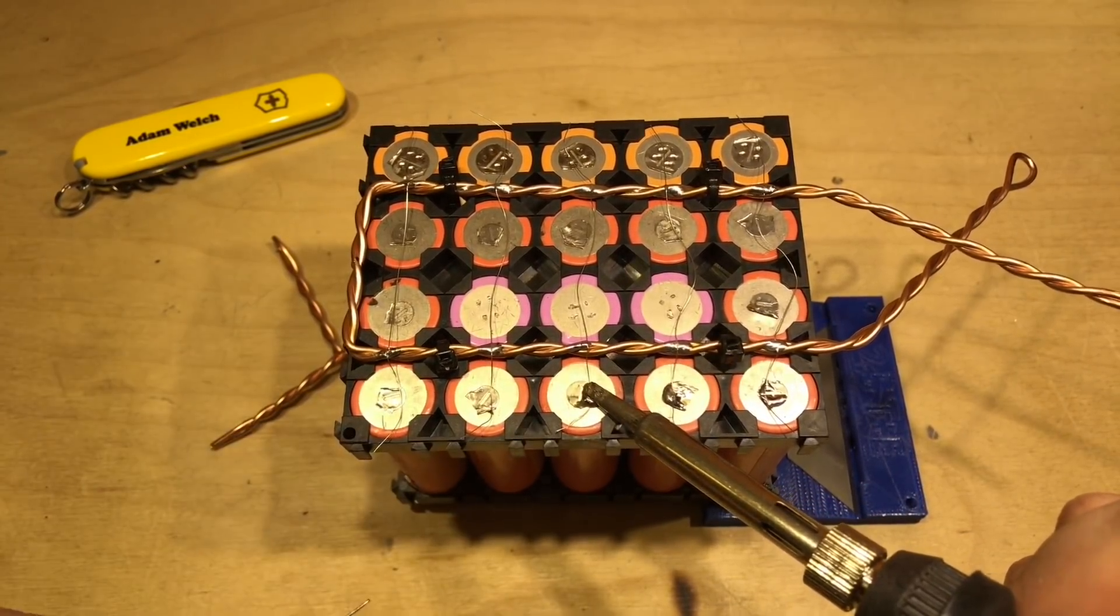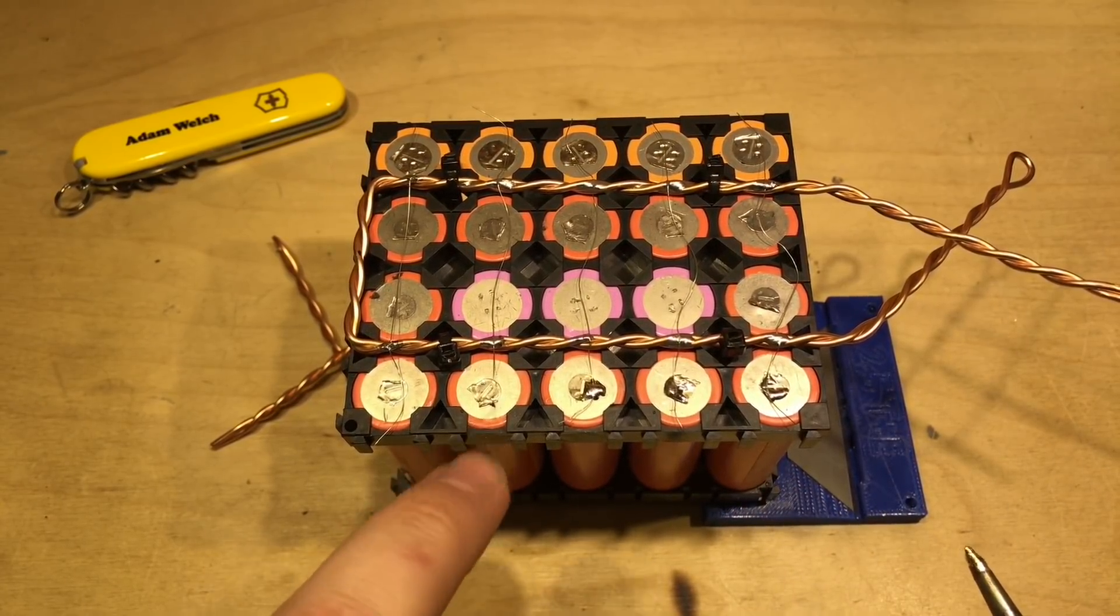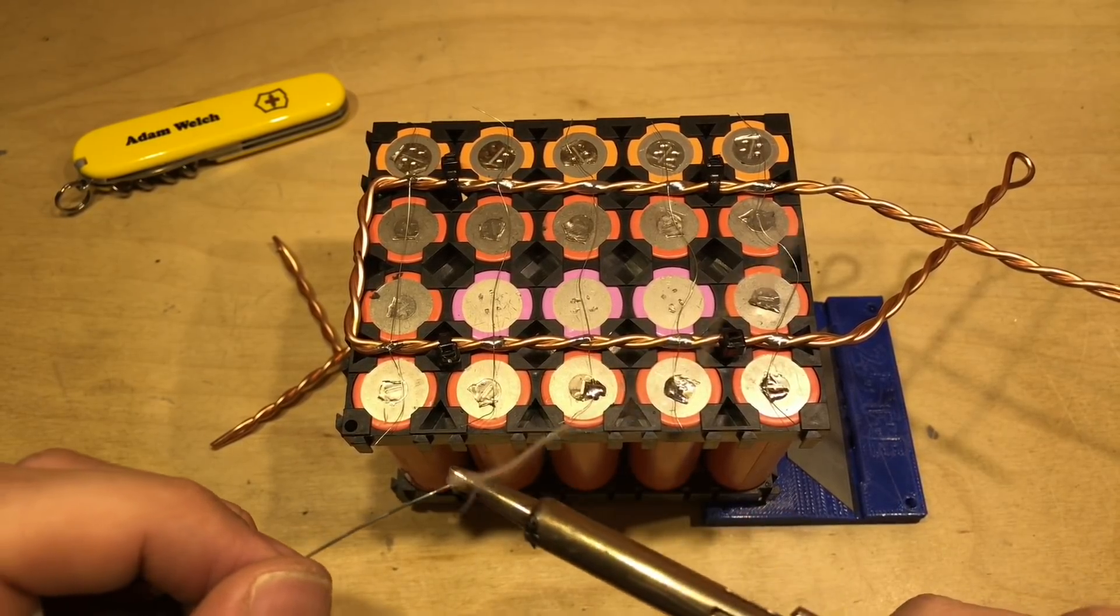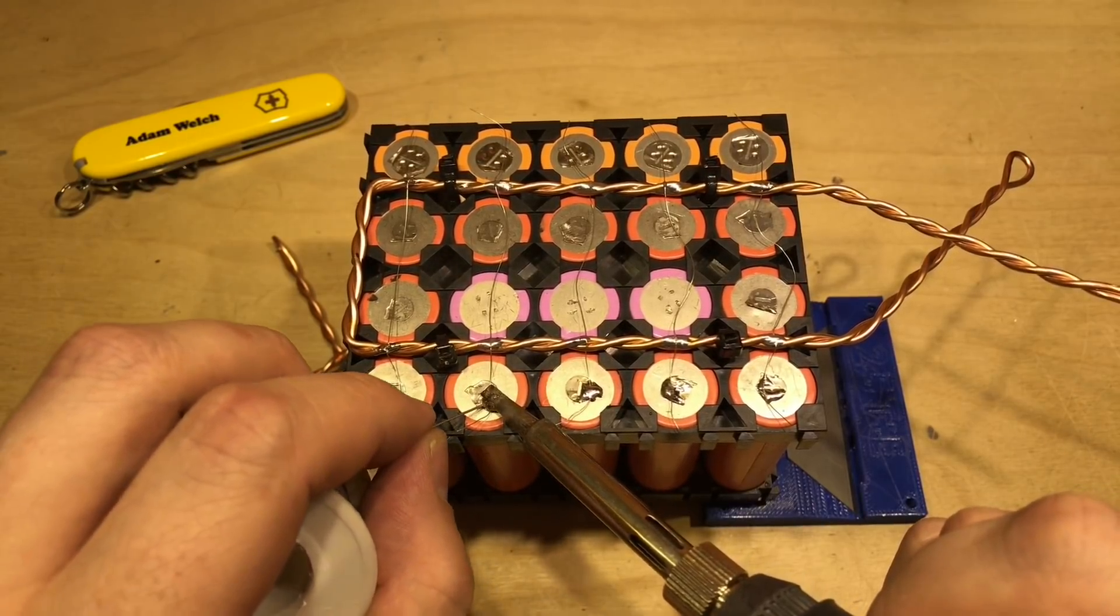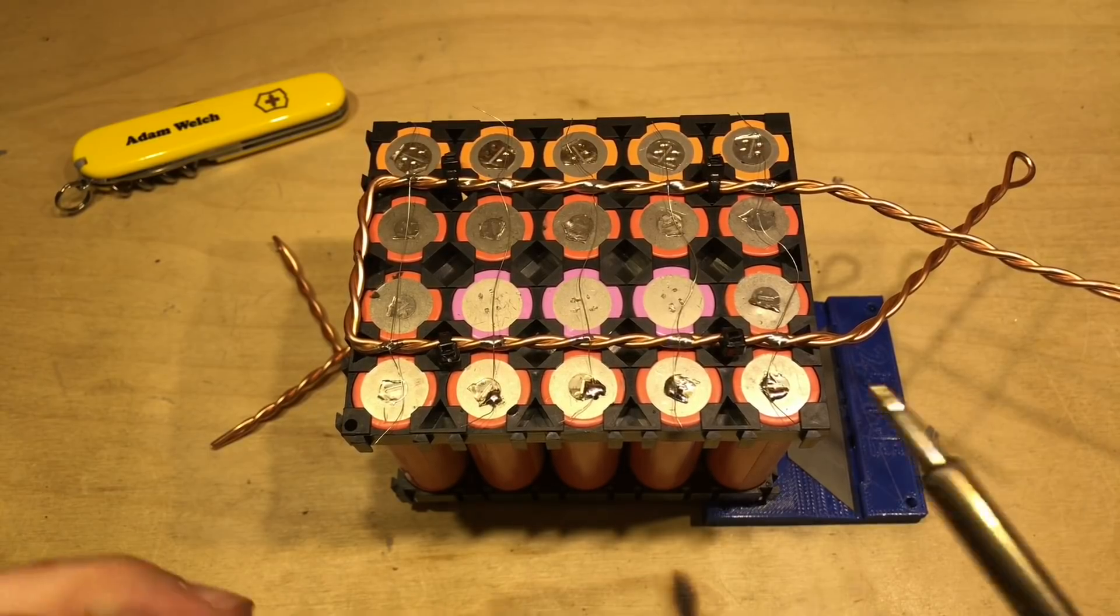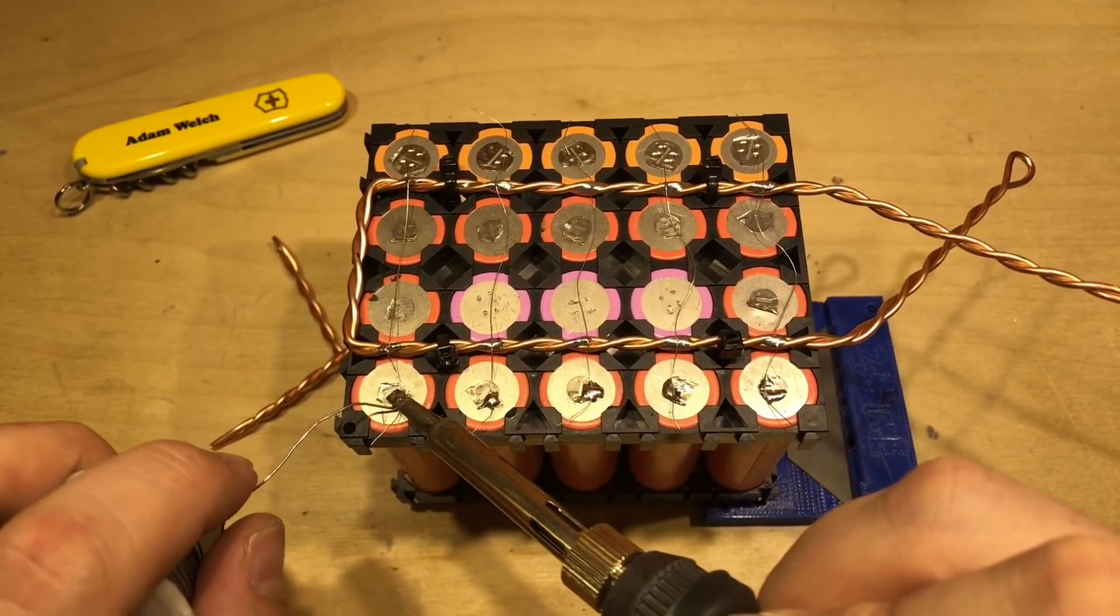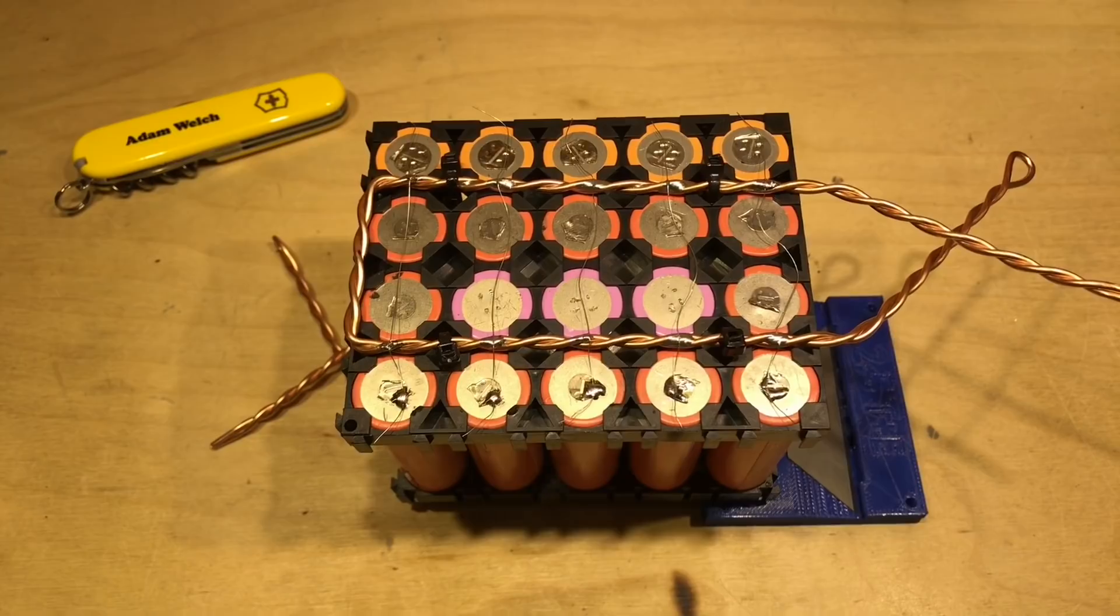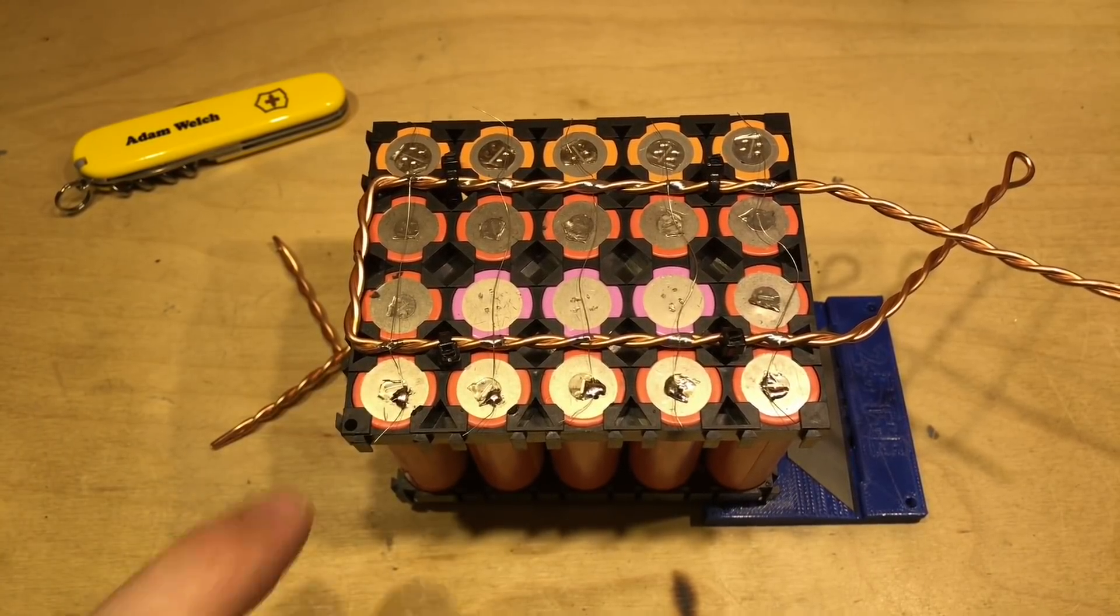Or I'm wondering whether it's because I've left some of the nickel strip on my cells there because actually that might give a better surface to solder to than the actual surface of the cell itself. Either way as you can see I'm not holding the soldering iron on the cell for very long and I'm managing to solder my fuses onto the negative part of the cell.